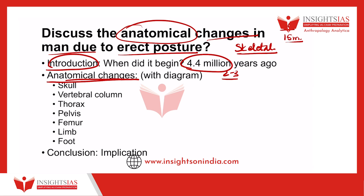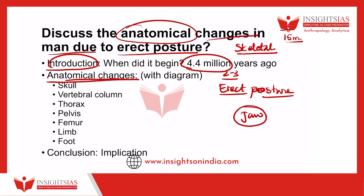Please remember: write only those anatomical or structural changes that occurred in man as a result of erect posture. I have seen students write all the differences between man and ape, including the jaw. The changes that occurred in the jaw are not directly associated with erect posture. The mandible size, for example, is not because of erect posture — it is because of diet, tools, and the invention of fire. So don't write jaw as a change due to erect posture, as that would make your answer wrong.